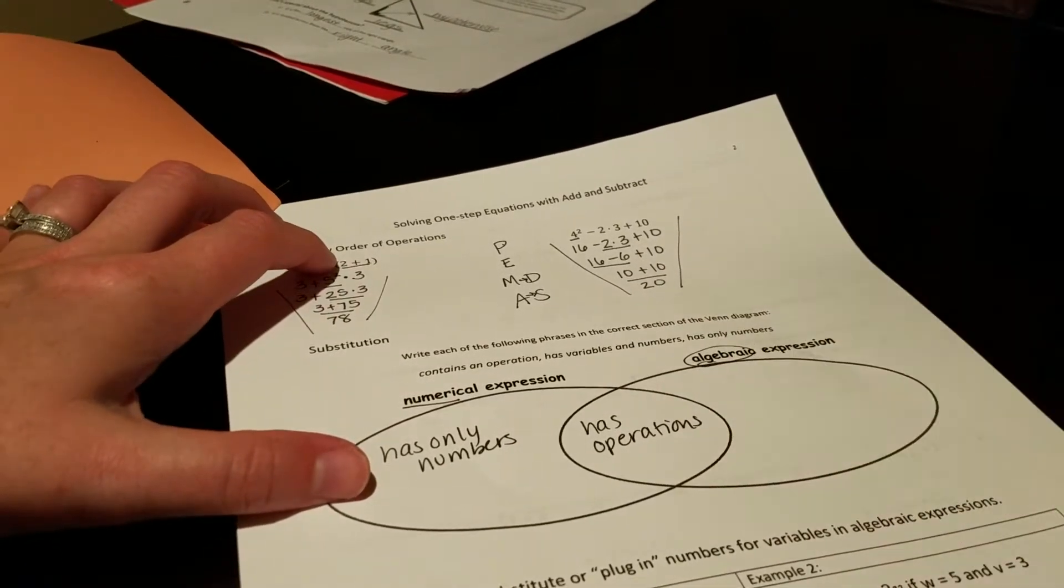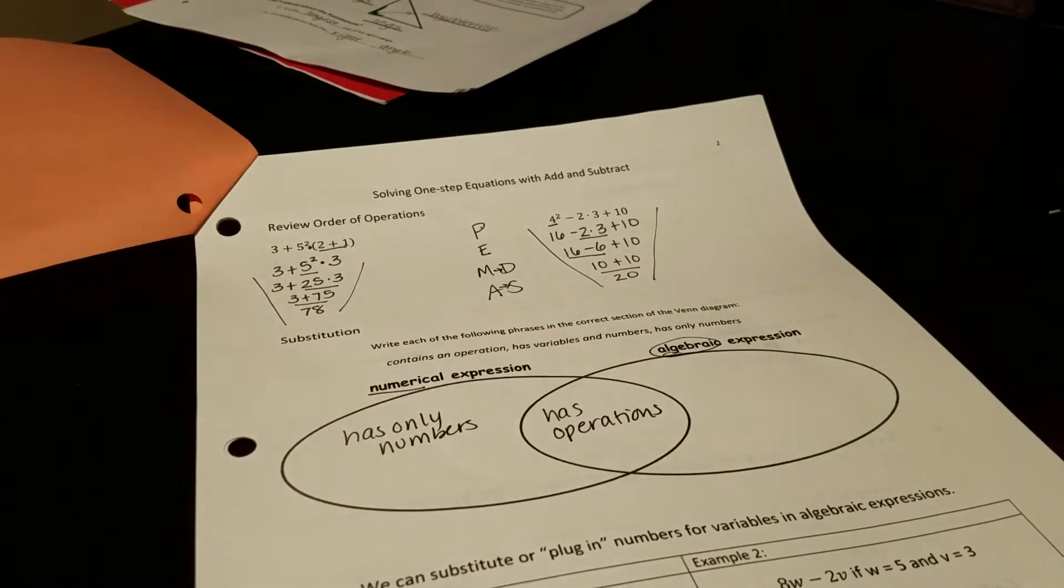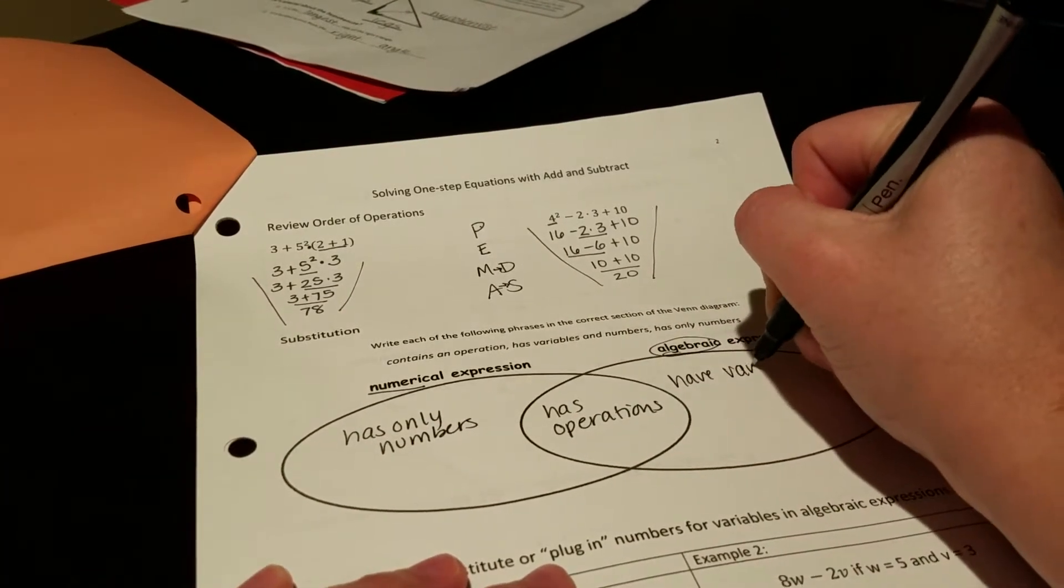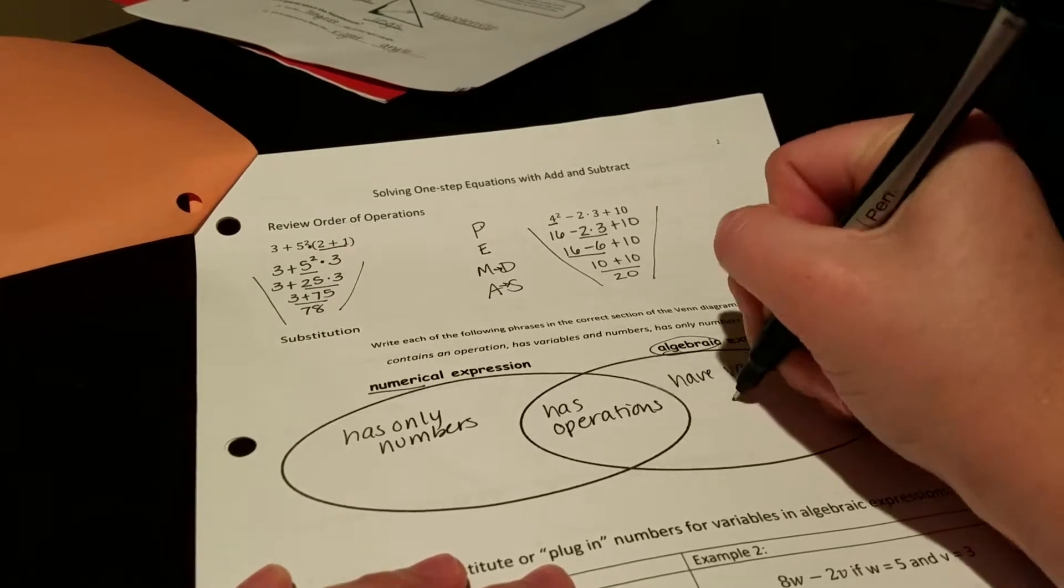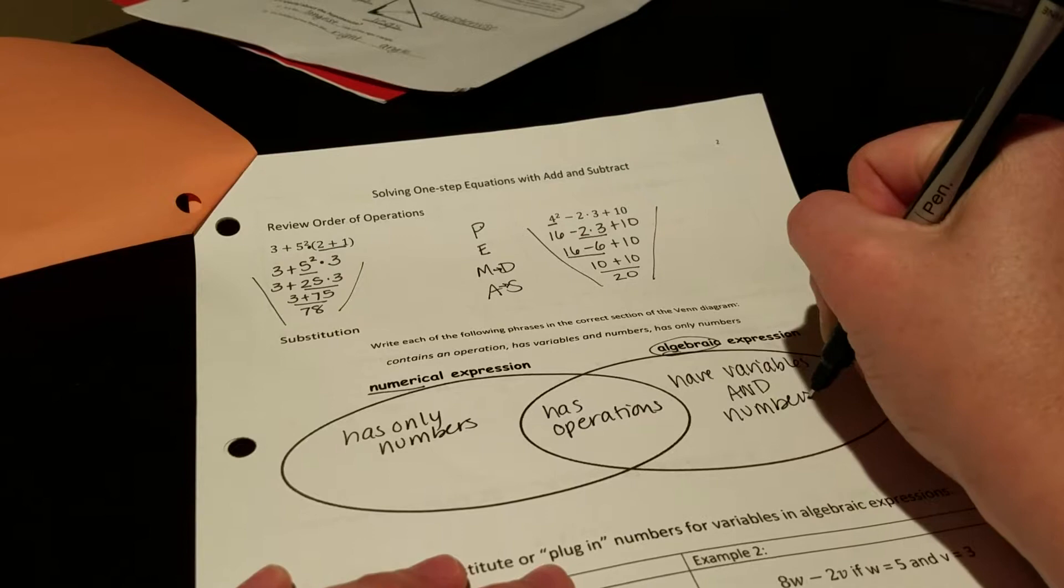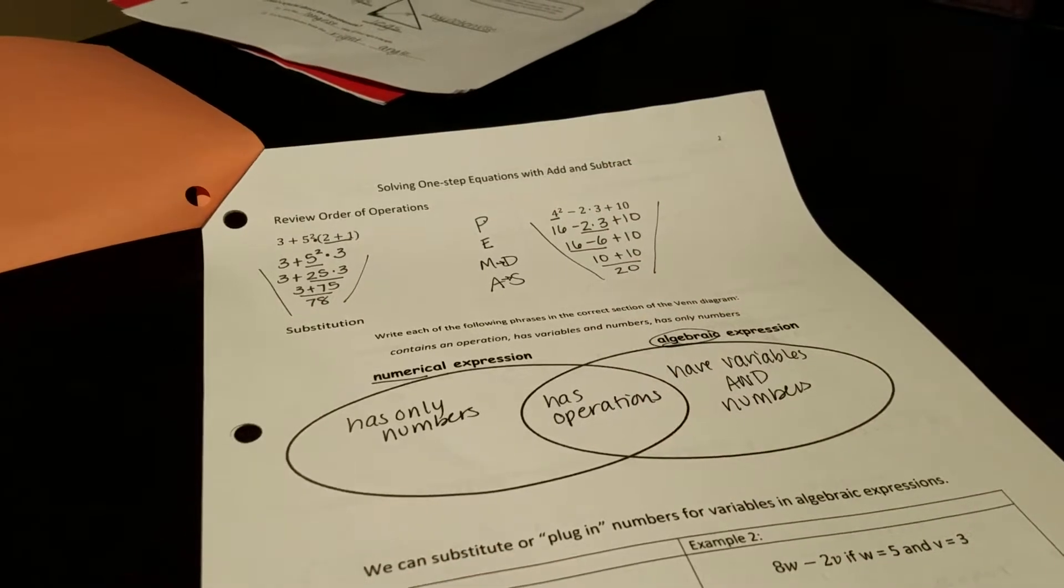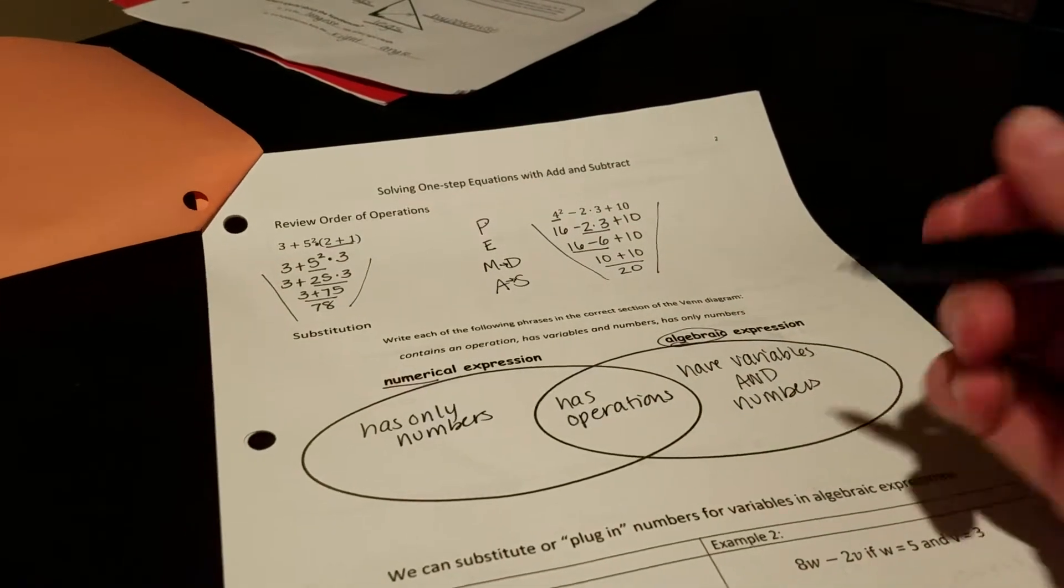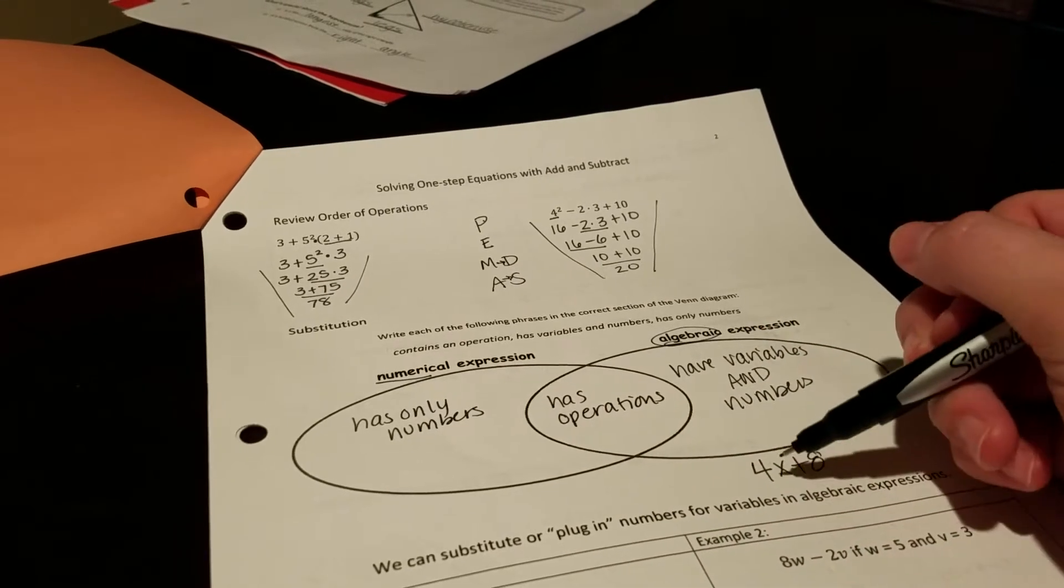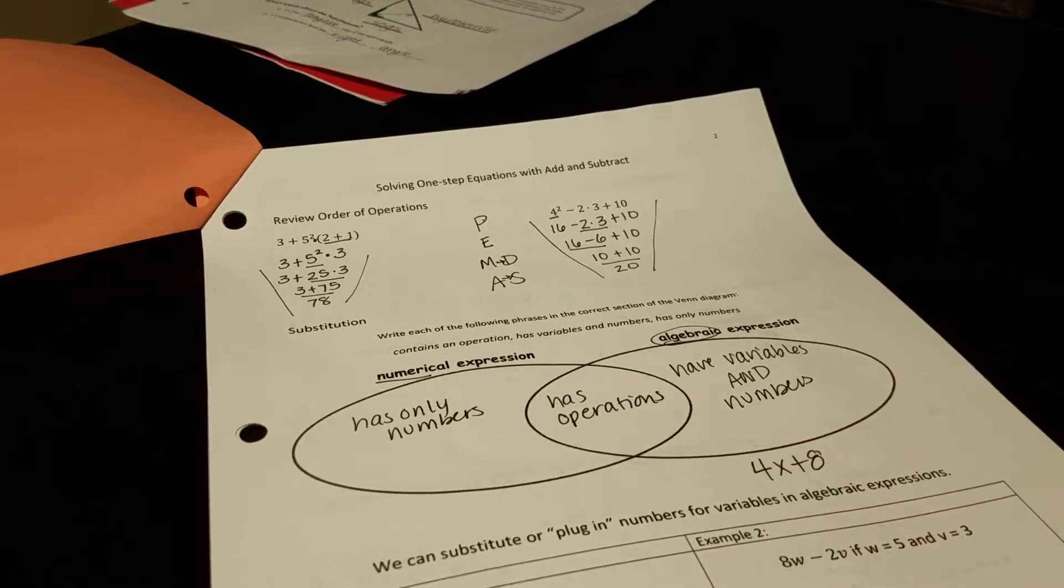Algebraic expressions is a little bit new. We started to see that in the last chapter with the distributive property. These have variables and numbers, as well as having operations too. So the distributive property was a good example because if we ended up with an answer like this, this has variables, numbers, and the operations.